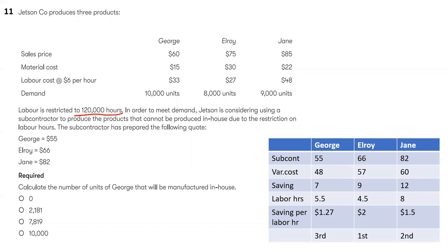Subcontracting costs are $55, $66, and $82. We compare these with variable costs — the combination of material and labor. $15 plus $33 gives $48; $38 plus $28 gives $57; and $22 plus $48 gives $60.